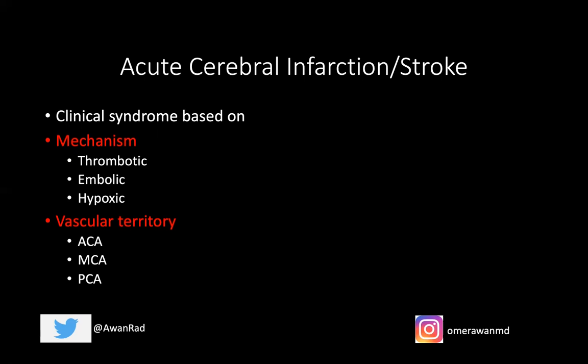In thrombotic strokes, a clot forms at the site where the vessel is blocked — in the ACA, MCA, or PCA — and it's usually related to a ruptured atherosclerotic plaque. In an embolic stroke, emboli from somewhere distant to the brain come and block the vessel. This could be from atrial fibrillation, endocarditis, or a DVT with a patent foramen ovale — something comes and blocks the vessel into the brain.